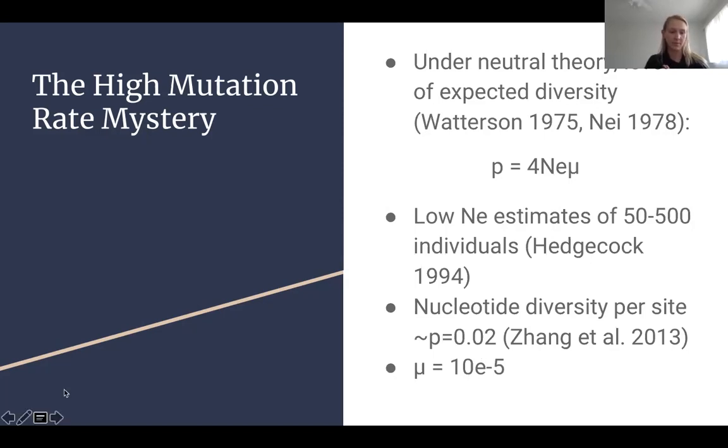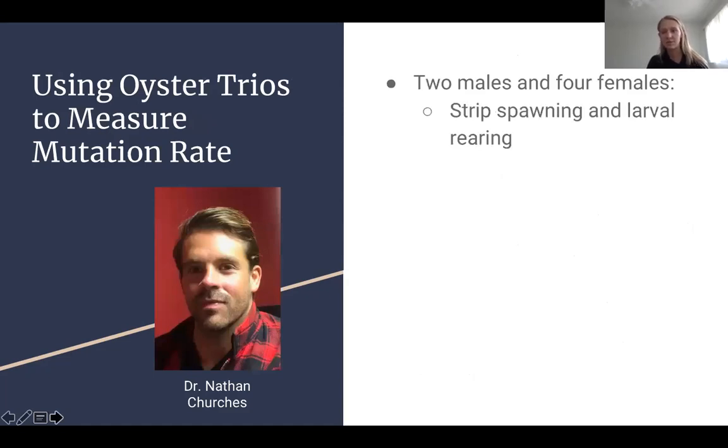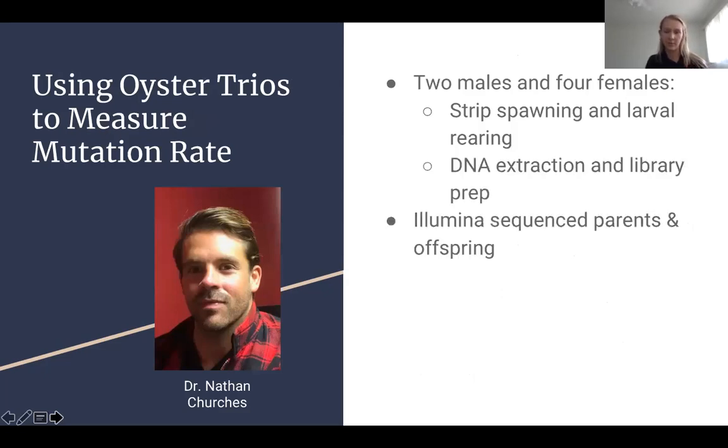That work was done by a member of my lab, Nate Churches. What he did was he took two males and four females, strip spawned them, went through the larval rearing process, grew them up, and then extracted DNA, did library prep, Illumina sequencing, both the parents and the offspring.